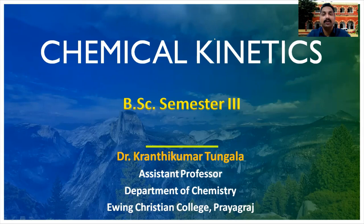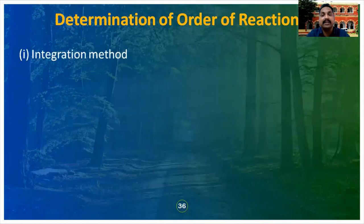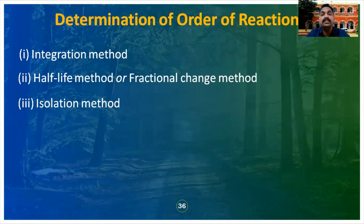Hello students, welcome to our sixth lecture on chemical kinetics. In our previous class, we discussed the determination of order of reaction. We saw that there are six methods by which we can determine the order of a reaction. We have already discussed three methods: the integration method, the half-life method or fractional change method, and the isolation method.